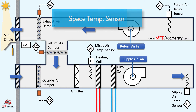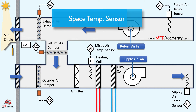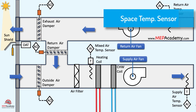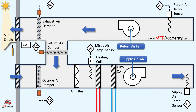The primary function of the space temperature sensor is to continuously monitor the temperature within the occupied zone. This sensor provides real-time feedback on the actual temperature where building occupants are present.